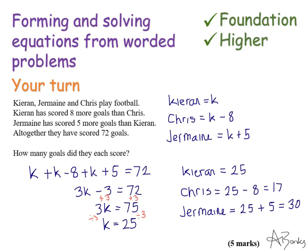And we can simplify that. And then solve it. So Kieran scored 25 goals. Which means Chris scored 17. And Jermaine scored 30.